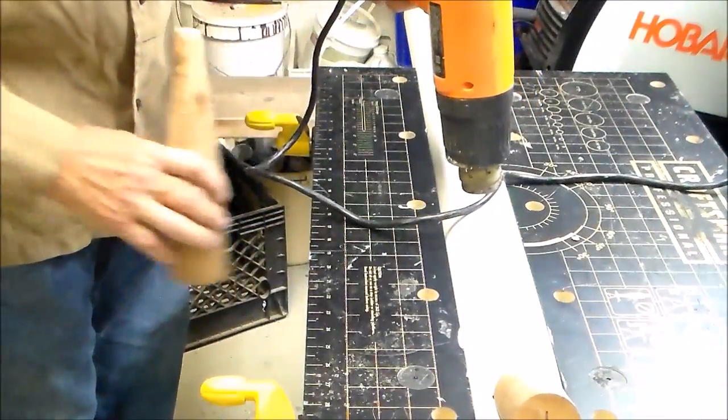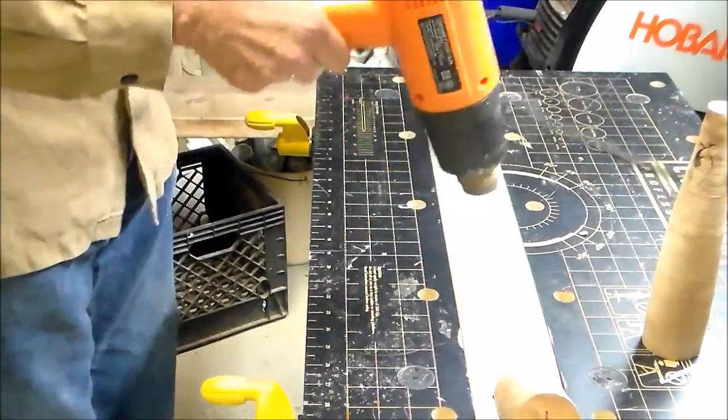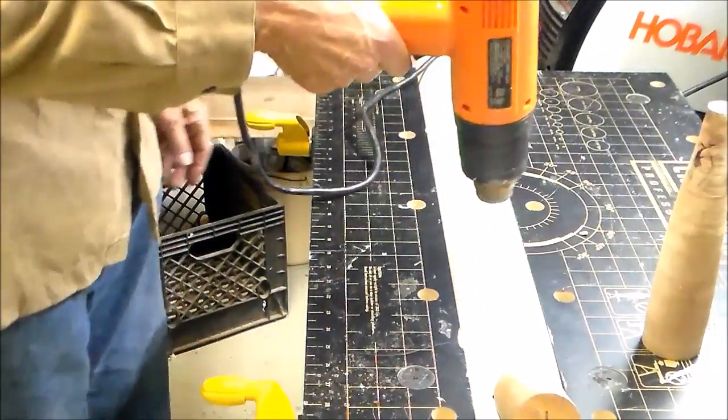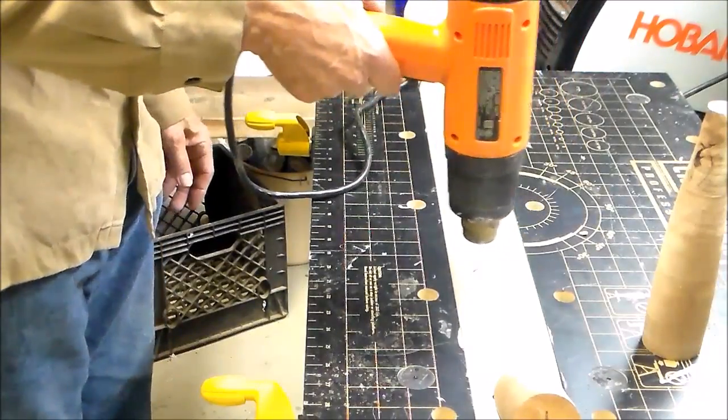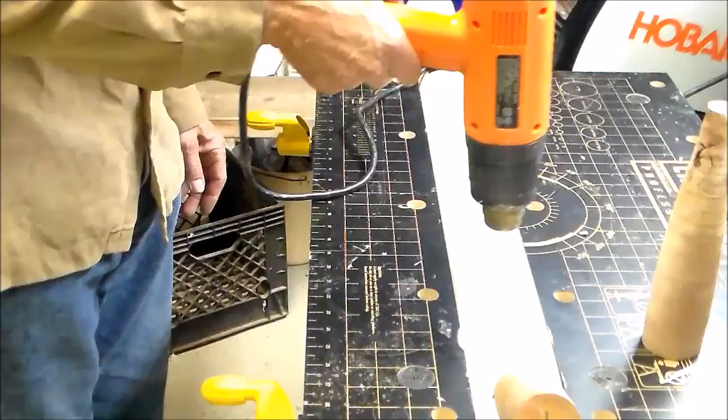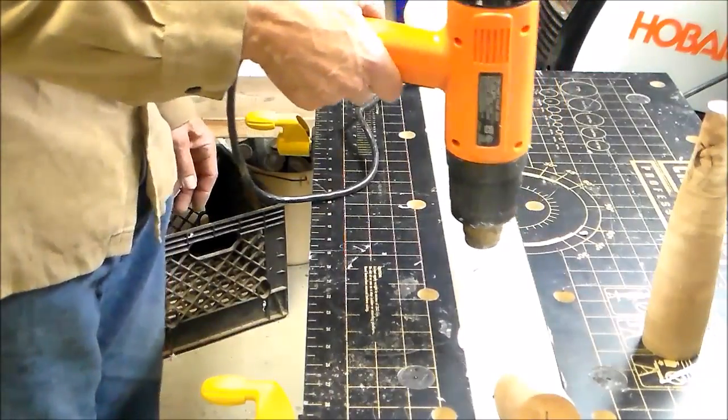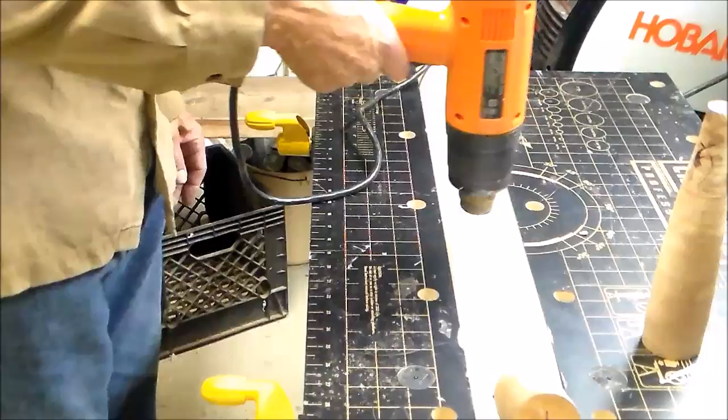Now here's the fourth wedge being, fourth slot being heated. The very first slot should be cooled by now so it's ready to be pulled out.